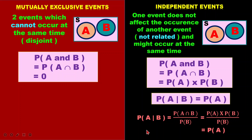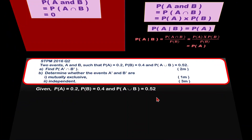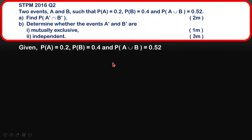I already talked about this before in my previous video. We are going to use both of those concepts to do the next question, because in STPM questions when they ask you to determine whether events are mutually exclusive or independent, we will use those two concepts we just reviewed. Let's do this 2016 question — two parts.